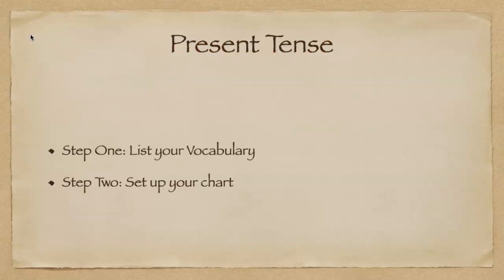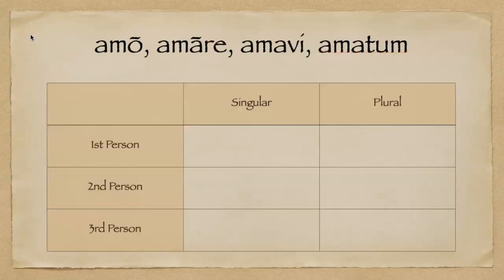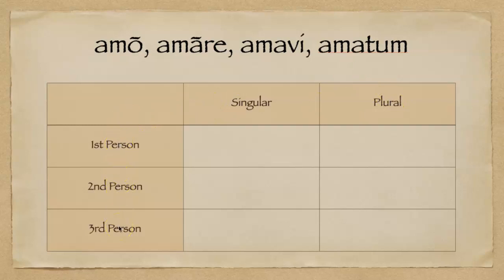Step two: we're going to set up your chart. When you're setting up your chart, you're going to have two columns — one for singular, one for plural — and three rows for first person, second person, and third person.